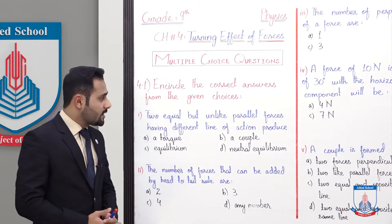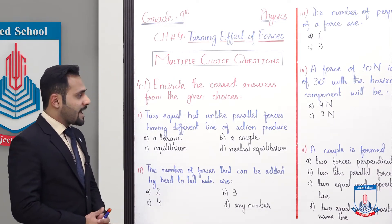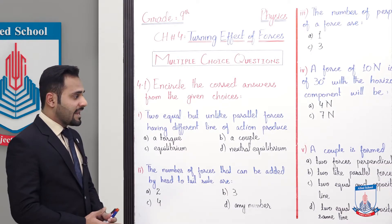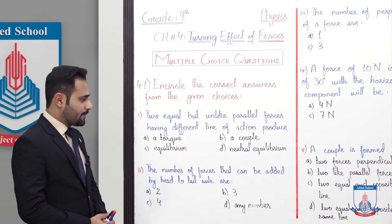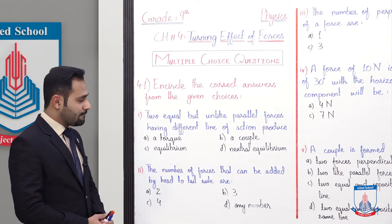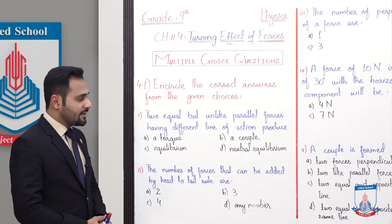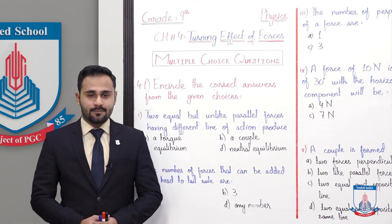MCQ number one: Two equal but unlike parallel forces having different line of action produce — A: a torque, B: a couple, C: equilibrium, and D: neutral equilibrium.